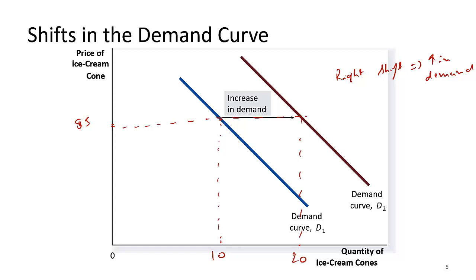Why does this change happen? The original demand curve might be associated with $1,000 income, while the shifted demand curve may be associated with $5,000 income. As income increases, you tend to buy more of a product. Think about it — if your income increases, you might want five houses instead of one, or multiple vacations instead of one. So for the same price, you are willing to spend more, and that's why this is called the shift of the demand curve.